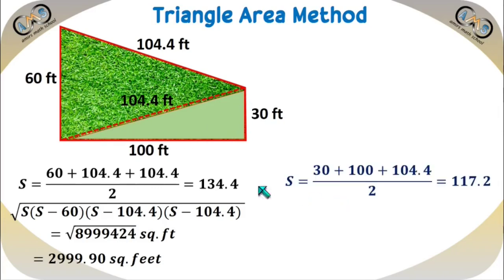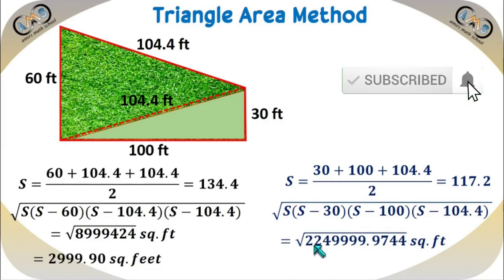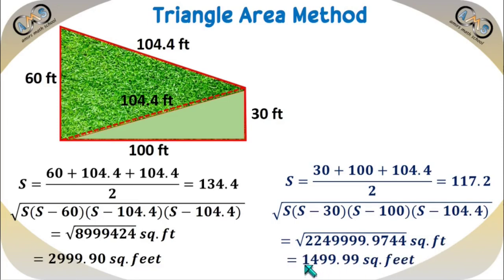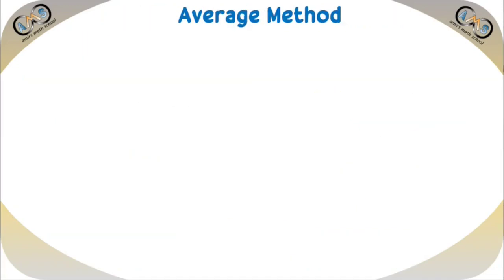For the second triangle with sides 30, 104.4, and 100: S = (30 + 104.4 + 100) / 2 = 117.2. The area = √(S(S−30)(S−100)(S−104.4)) = √2,249,999.9744 = 1,499.99 square feet. Adding both triangles: 2,999.90 + 1,499.99 = 4,499.89 square feet, which is very close to the original 4500 square feet. Dividing by 435.6 gives 10.33 shotok.